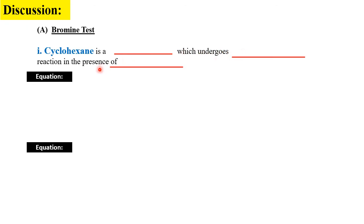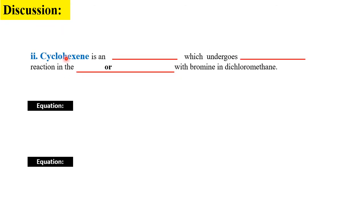For the discussion of the bromine test: what happened to cyclohexane? You need to write two equations — one without sunlight (dark condition) and one with sunlight. Similarly for cyclohexene: what is the difference between cyclohexane and cyclohexene, and what type of reaction does each undergo with bromine in dichloromethane?